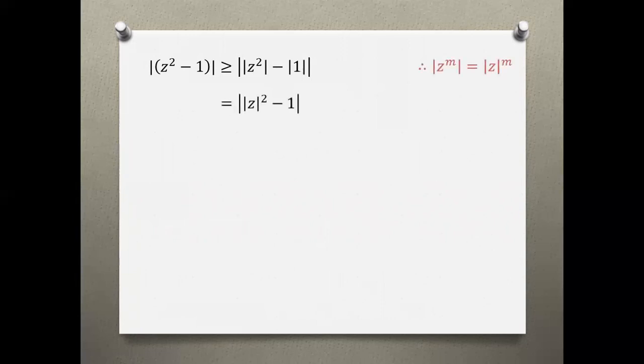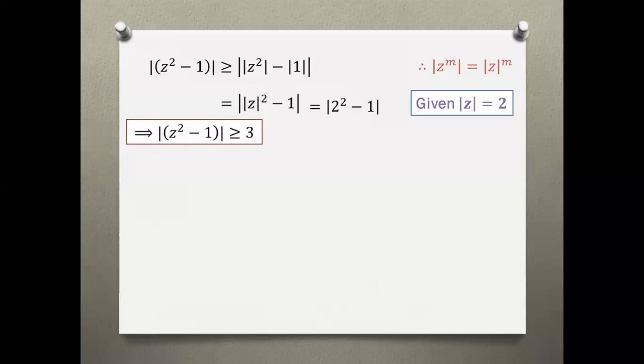We put this value in the form. Four minus 1 gives us 3. This forms: |z^2 - 1| ≥ 3. Similarly, we have to do this for z squared minus 3. We used inequality 8, then we used the power property, and we used the modulus value. Four minus 3 gives us 1.